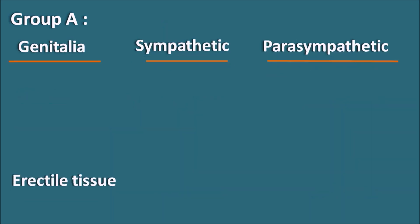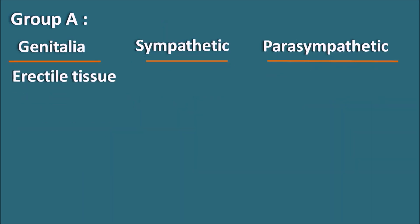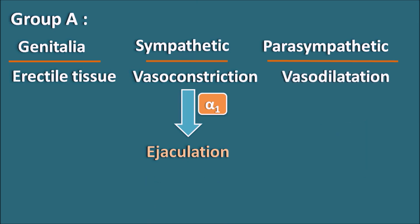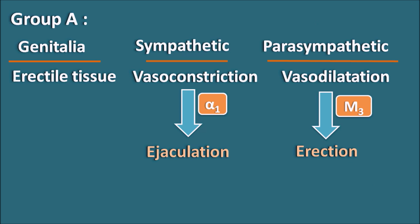The next organ is the genitalia. At the erectile tissue, the sympathetic system produces vasoconstriction through alpha 1 receptors, which results in ejaculation, and the parasympathetic system produces vasodilation through M3 receptors, which produces erection. So erection of the erectile tissue is due to vasodilation mediated by the parasympathetic system.